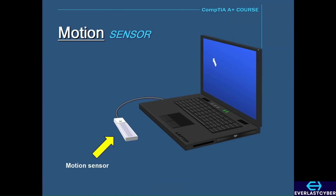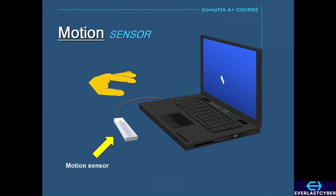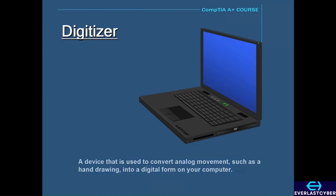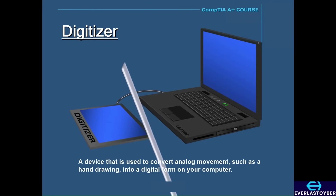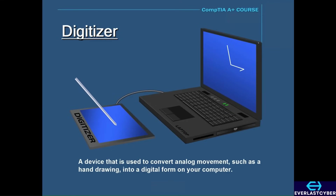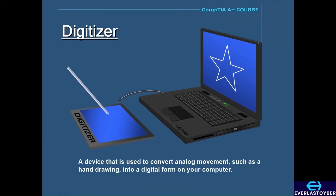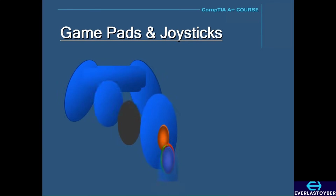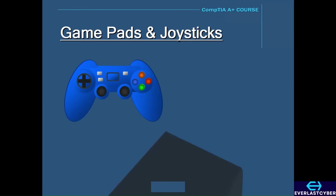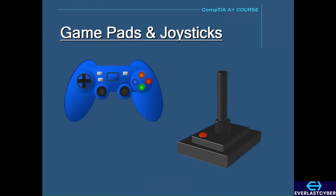A motion sensor records your hand movement in mid-air without any physical contact with a device, and typically connects to your computer via USB. A digitizer converts analog movement, such as a hand drawing, into digital form on your computer. It has a flat surface like a tablet with a stylus — as you draw, it records and processes the image on screen, connecting via USB. Other input devices include game pads and joysticks used for gaming systems like Xbox and PlayStation, which can also connect to computers via USB.